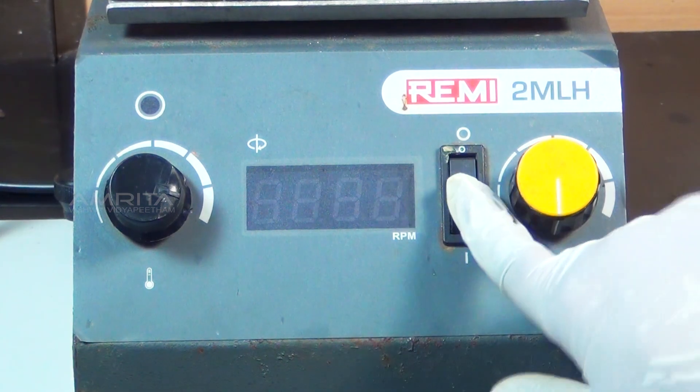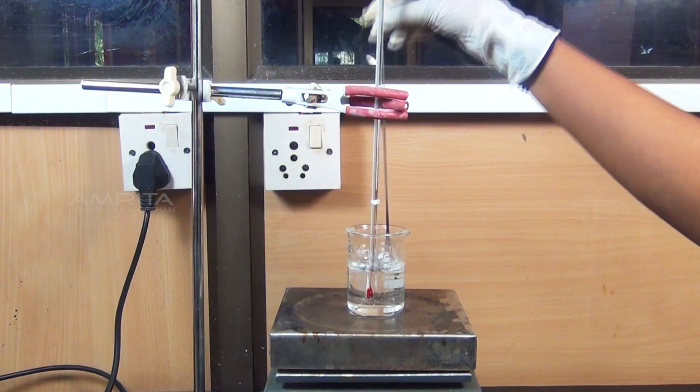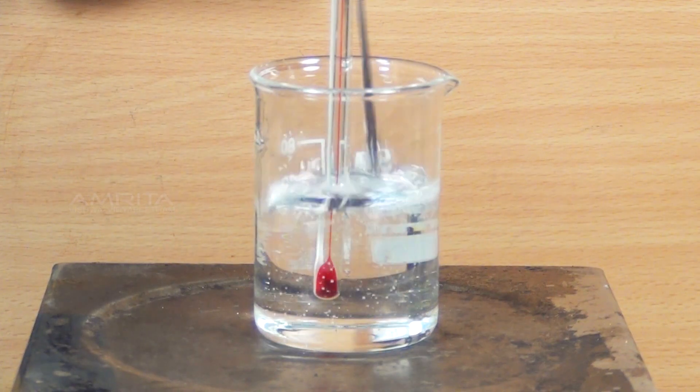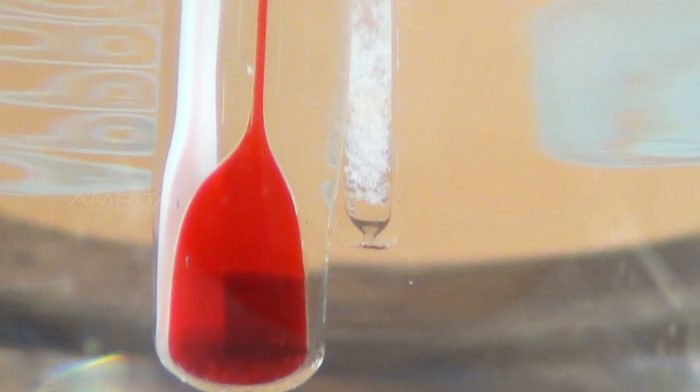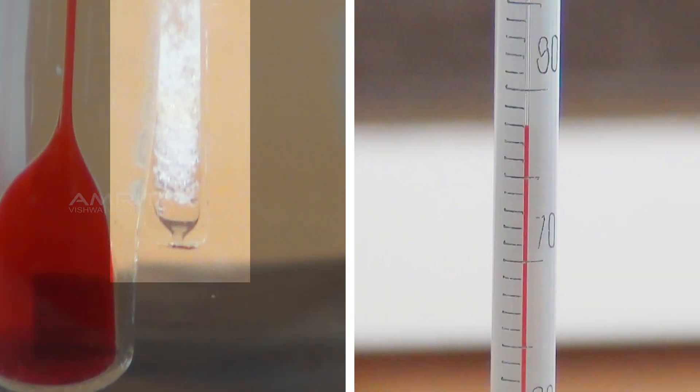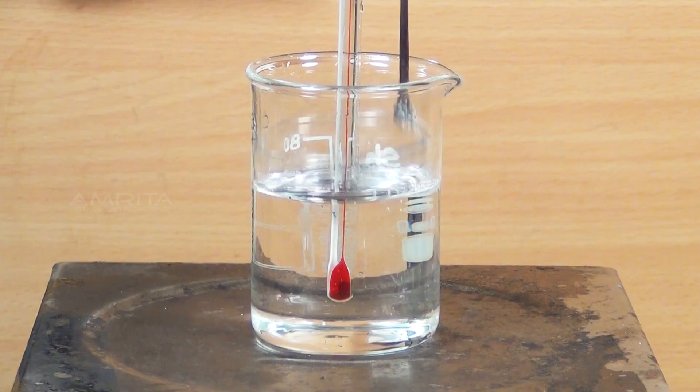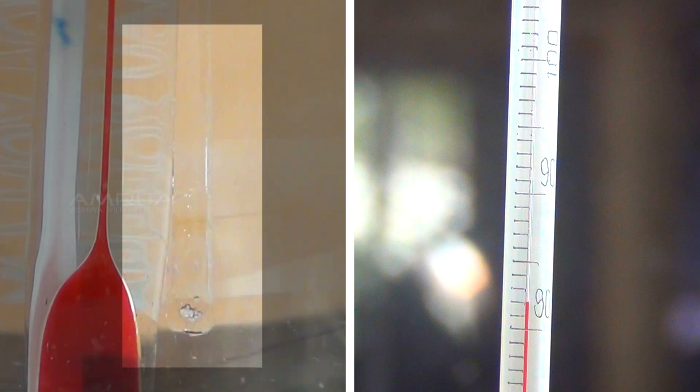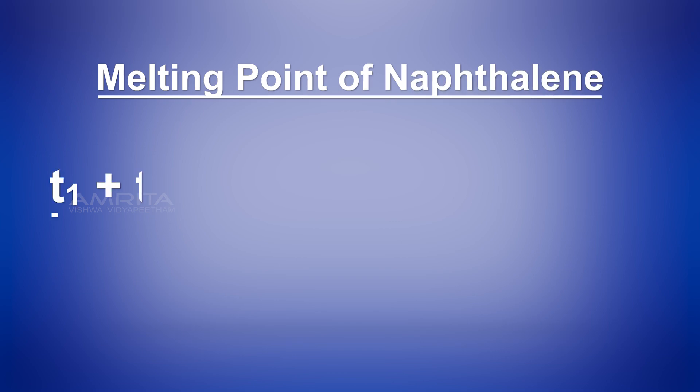Start heating the liquid paraffin bath slowly and stir the bath gently using the stirrer to ensure uniform heating. Note the temperature T1 when the naphthalene starts melting. Continue heating and note the temperature T2 when the naphthalene in the capillary tube is completely melted. The average of the two temperatures T1 and T2 gives the melting point of naphthalene.